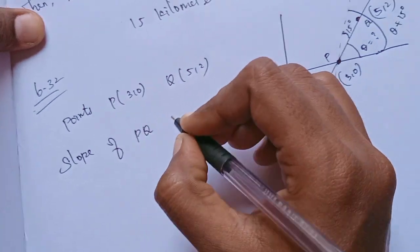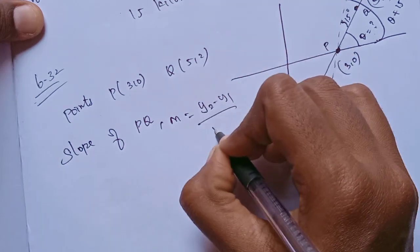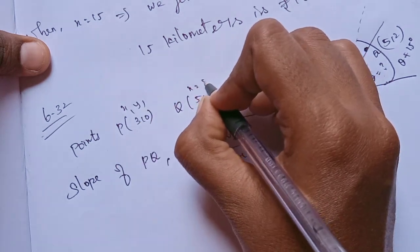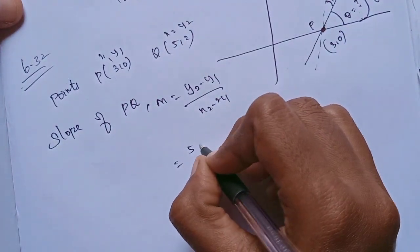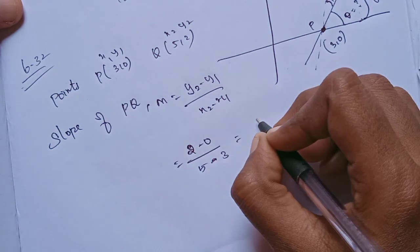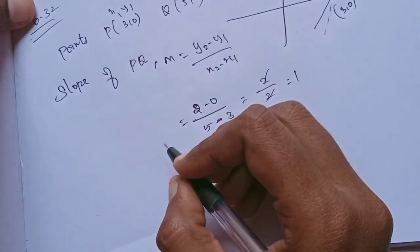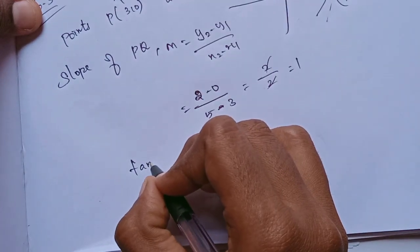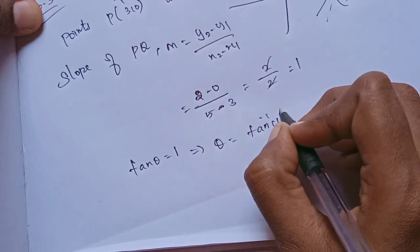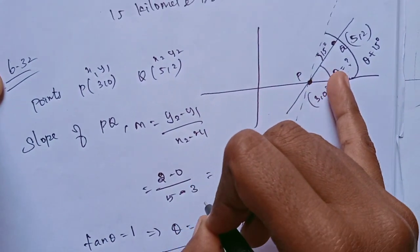The slope Q is equal to (y2 minus y1) divided by (x2 minus x1). So x1, y1 is (3,0) and x2, y2 is (5,2). Substituting: 2 minus 0 by 5 minus 3 gives 2 by 2, so this is 1. M is equal to tan(theta), so tan(theta) equals 1, then theta equals tan inverse of 1, which is 45 degrees.